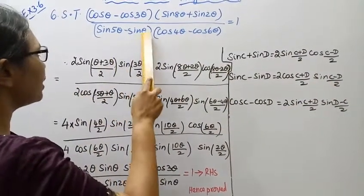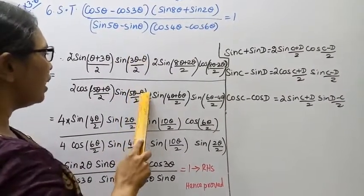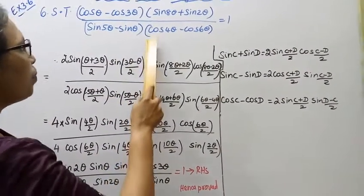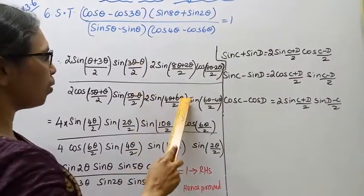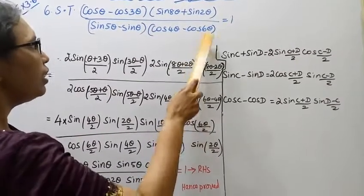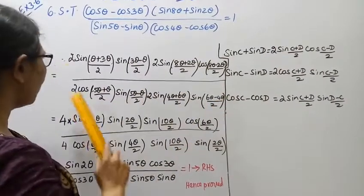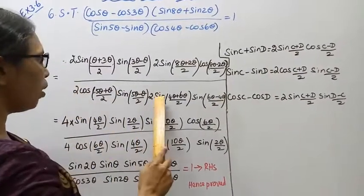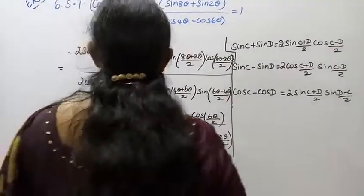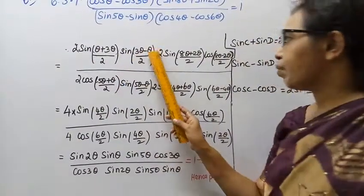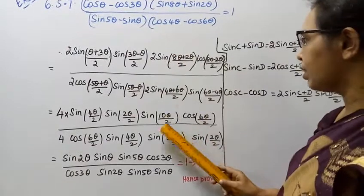2 cos((5 theta plus theta) by 2) into sin((5 theta minus theta) by 2). For cos C minus cos D: 2 sin((4 theta plus 6 theta) by 2) into sin((6 theta minus 4 theta) by 2). The denominator gives 2 into 2 equals 4. We get sin((theta plus 3 theta) by 2) equals sin(4 theta by 2), sin((3 theta minus theta) by 2) equals sin(2 theta by 2), sin((8 theta plus 2 theta) by 2) equals sin(10 theta by 2), cos((8 theta minus 2 theta) by 2) equals cos(6 theta by 2).